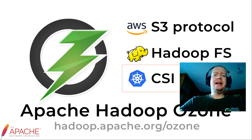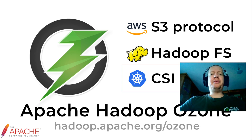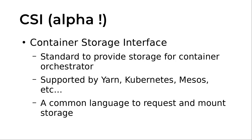The main goal here is nothing more than mounting a bucket to a container. So first of all, what is CSI? CSI is the Container Storage Interface — it's a standard to provide an RPC interface which can be used by any container orchestrator like Kubernetes, Mesos, or YARN. All of these orchestrators can request some kind of storage and request to mount that storage from any storage provider, in this case Ozone.